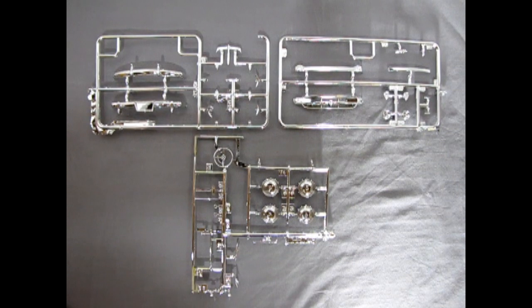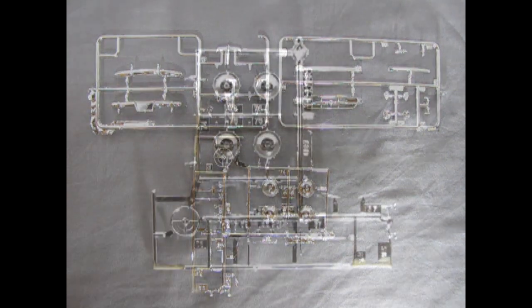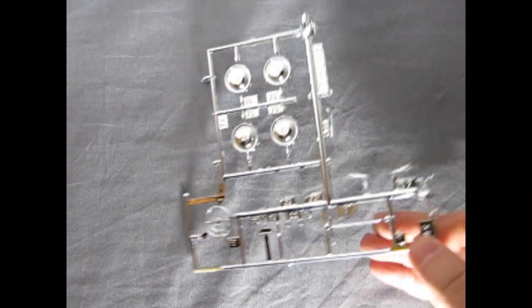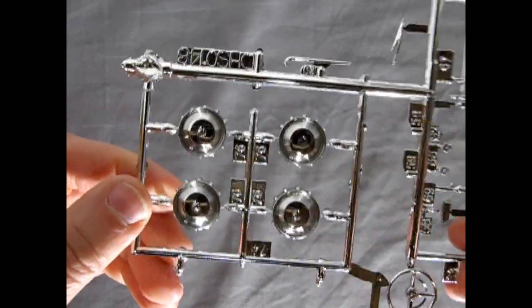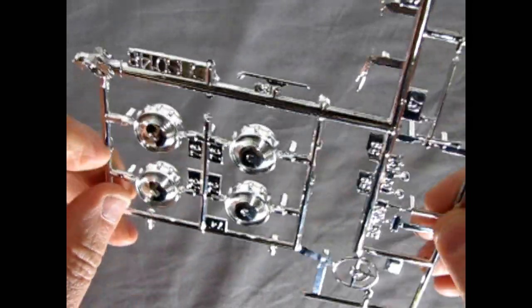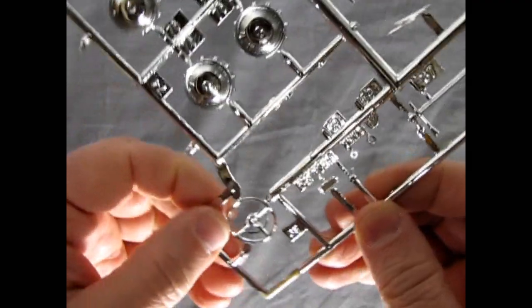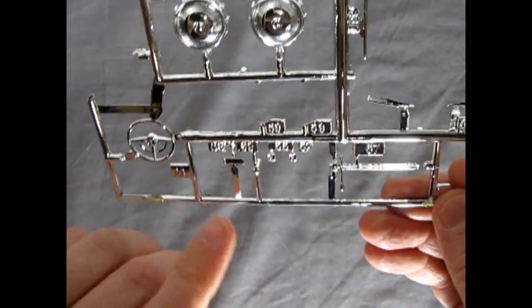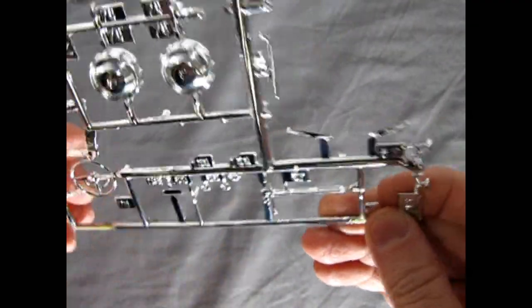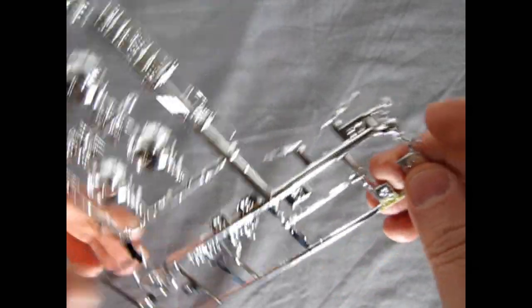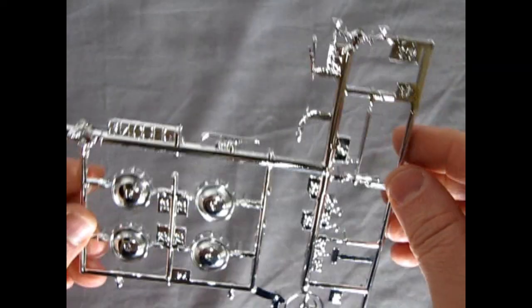Mobius also includes three fully chrome parts trees. First we can start with our wheels and hubcaps. And as you can see the detail on here is really nice. There's a spot for the Hudson emblem to go right in the dead center. There's our awesome looking steering wheel as well as our mirrors and windshield wipers. There's our steering column as well and our side view mirrors.